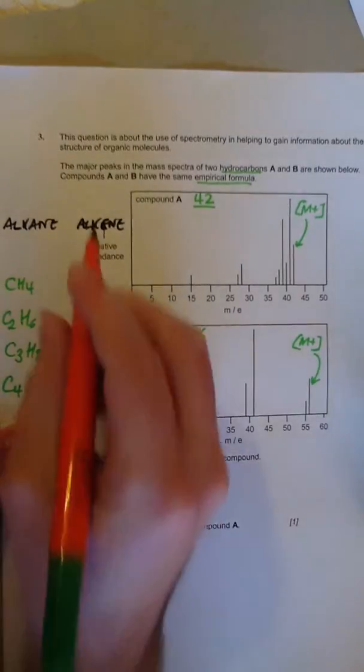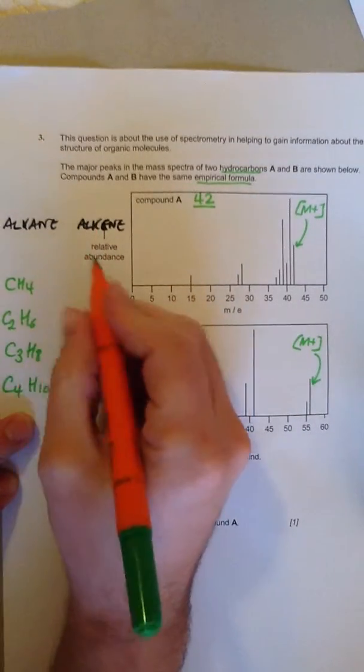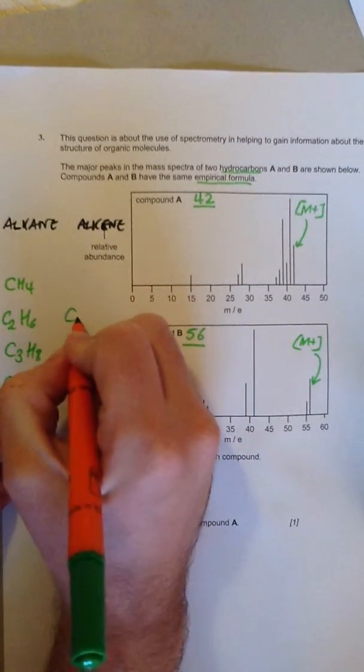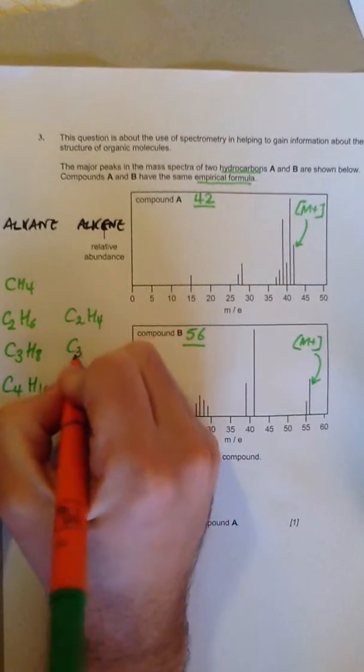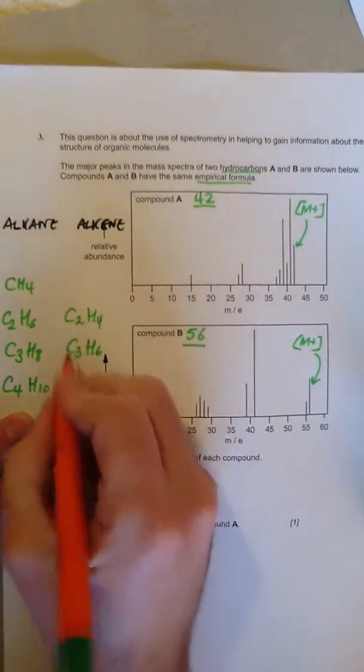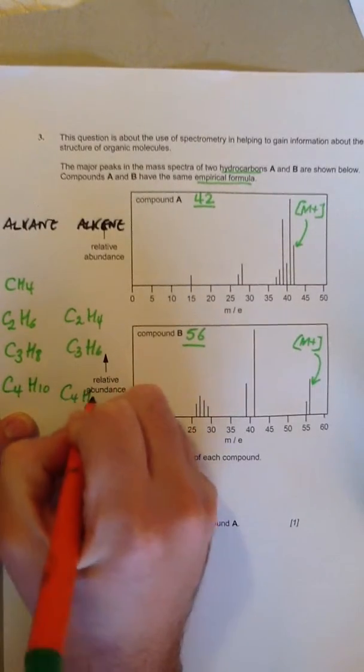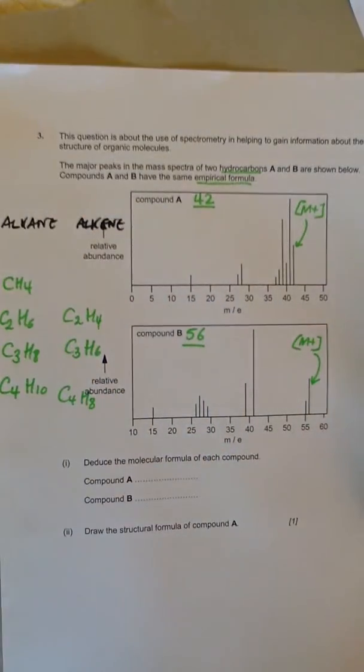If it were an alkene, either of these could be C2H4 ethene, C3H6 propene, or C4H8 butene.